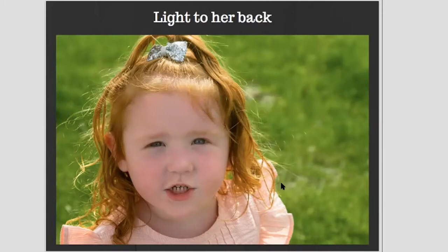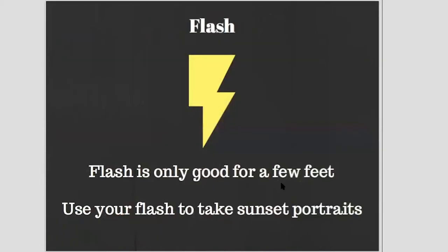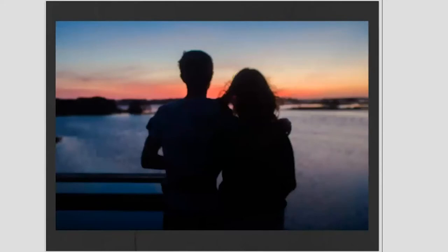Even if it's not a person but a subject, the same principle applies. Flash: how many times have you seen someone on the side of the Grand Canyon trying to take a photo of it with their flash on? Your flash is only good for a few feet — anything past a few feet it's not going to work. Keep that in mind. One problem people have with sunset photos is when two people are in front of the sunset, if you expose for the sunset the people are too dark.